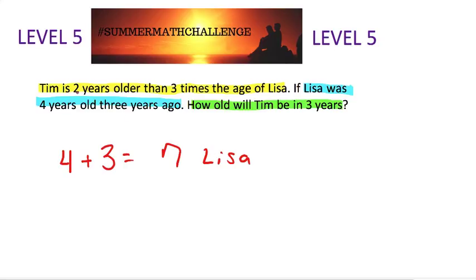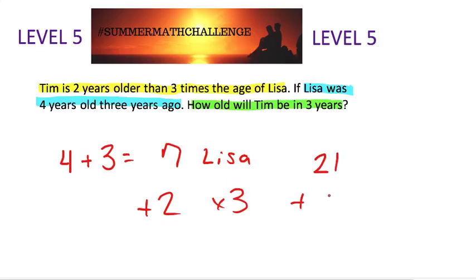So Tim is 2 years older than 3 times the age of Lisa. What do we do first — do we add 2 or do we multiply by 3? If you know your PEMDAS — Parentheses, Exponents, Multiply, Divide, Add, Subtract — we know we have to multiply before we add. So 3 times 7 is 21, and then we add the 2. That gives us 23.